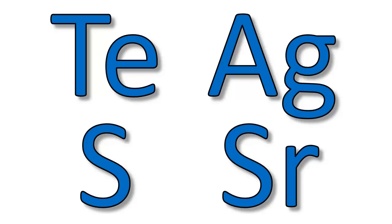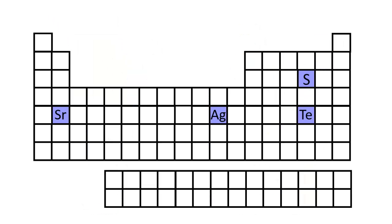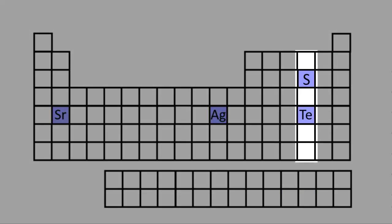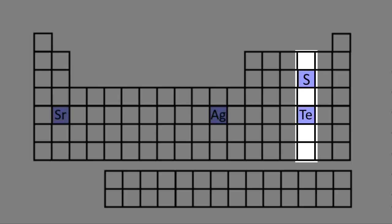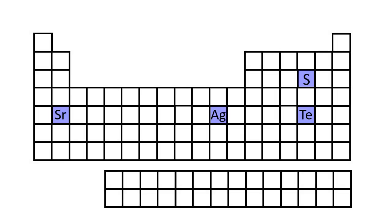Let's say we were trying to list the following four elements from largest to smallest: tellurium, silver, sulfur, and strontium. Let's take a look at where they lie on the periodic table. Notice that tellurium and sulfur are in the same group, and that tellurium lies below sulfur — that means tellurium has a larger atomic radius than sulfur, since atomic radius increases going down a group.